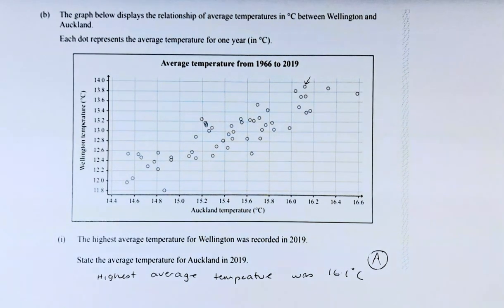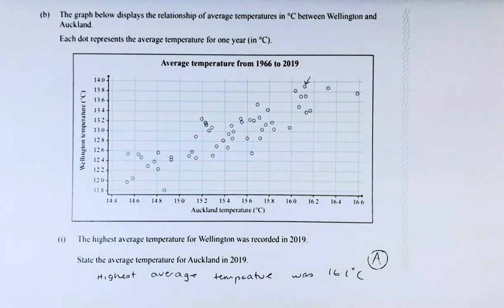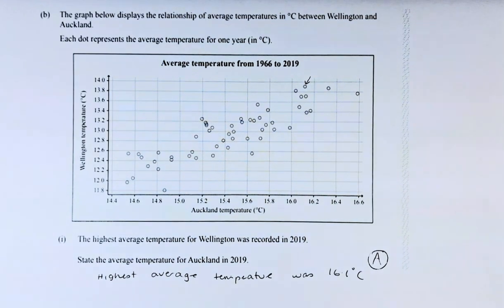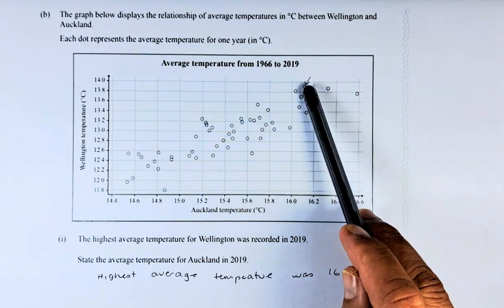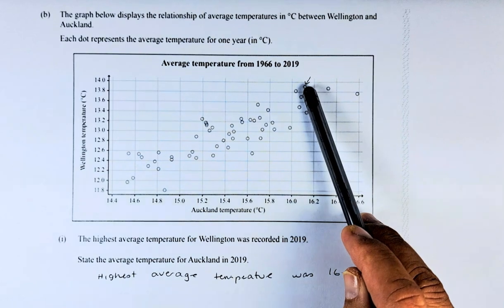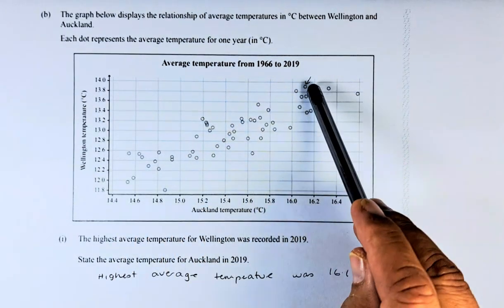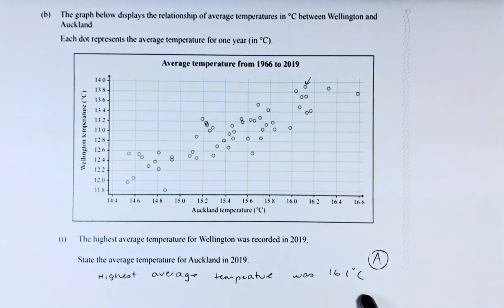So the question is, the highest average temperature for Wellington was recorded in 2019. State the average temperature for Auckland in 2019. The average temperature in Wellington was recorded at this point here. So you want to find what the temperature in Auckland. So you bring it down, it's going to be 16.1. If you can answer that, the answer will give you an achieve in this paper.